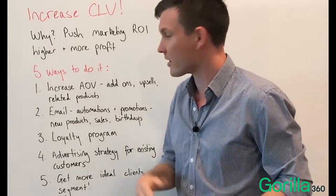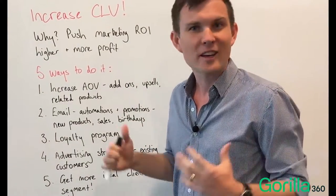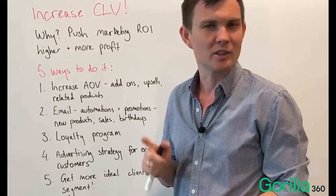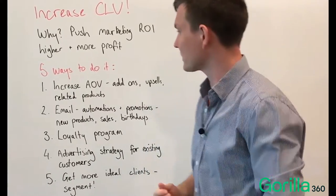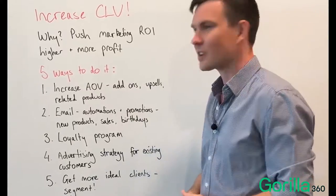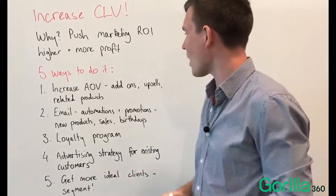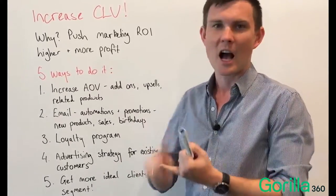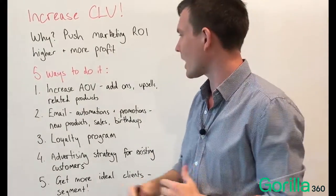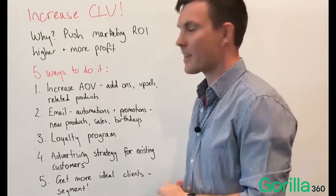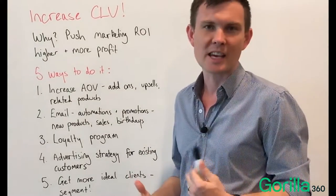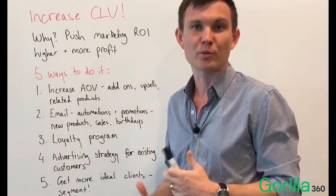These five things are not everything — they're just some really quick ideas that you guys can do to try and push your CLV higher. Number one: increase the average order value. How can you get your average order value higher? Can you upsell or suggest related items? Are there add-ons that go with your products, related products — things like that?